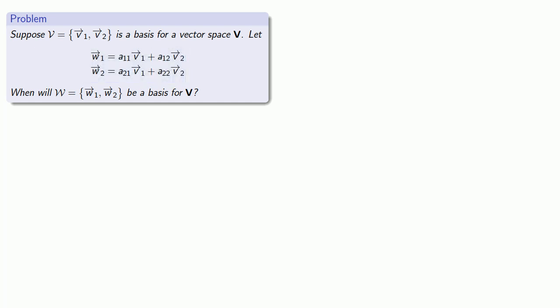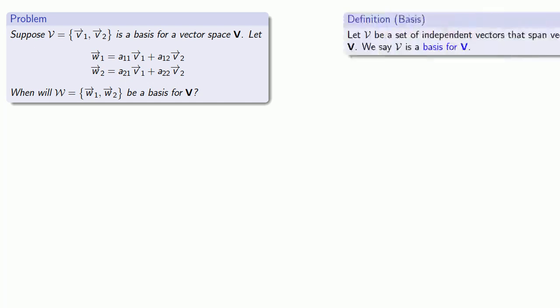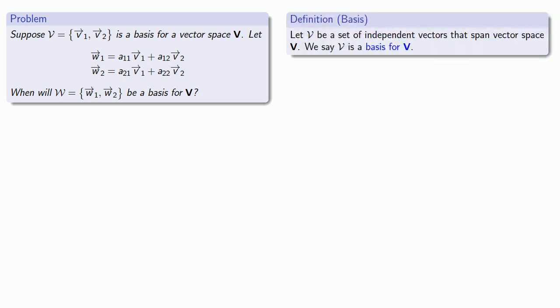Here's the challenge. Let's make sure that W1, W2 is still a basis for our vector space. That means we need to check two things. First, that these two vectors are independent. And second, that they actually span our original vector space.